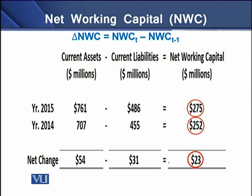To understand net working capital in terms of change, we can see an example on the screen. We use current assets and current liabilities for two years, 2015 and 2014. For the year 2015, the net working capital is $275 million, and for 2014, the net working capital is $252 million. The net change over the period is $23 million, and this is called the change in net working capital.